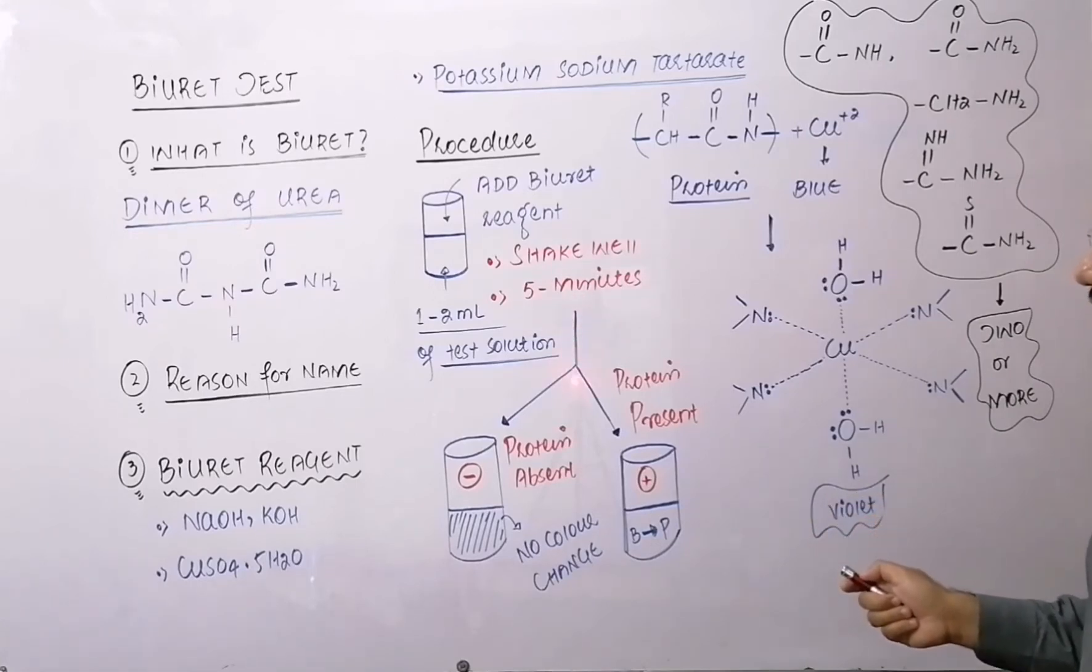After 5 minutes, now look at the contents of the test tube. If the color in the test tube is blue, it means there is no color change because the blue color is because of this hydrated copper sulfate. So no color change shows negative biuret test and the result is that protein is absent.